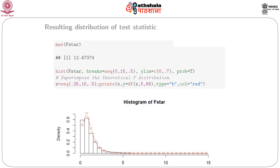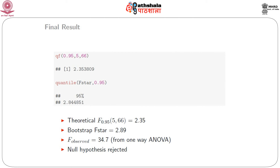We then plot the histogram of the bootstrapped F_star and superimpose the F(5, 66) curve. The bootstrapped distribution is a bit different from the theoretical distribution — the tails are a bit heavier. The critical value of F(5, 66) at alpha = 0.05 is 2.35, which differs from our bootstrapped F_star critical value obtained via 'quantile(F_star, 0.95)', but both values are less than the observed F of 34.7, so the null is rejected.